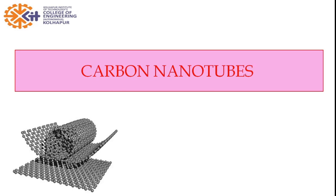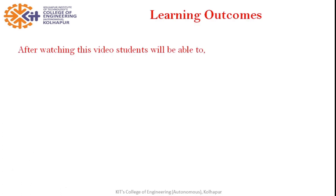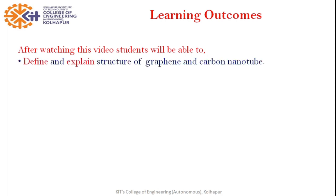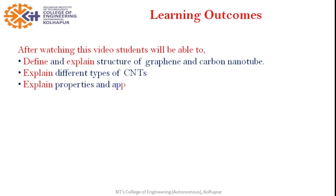Hello everyone. In this video we are going to study carbon nanotubes. The learning outcomes of this video are: students will be able to define and explain the structure of graphene and carbon nanotube, explain different orientations and types of carbon nanotubes, and describe different properties and applications of carbon nanotubes.